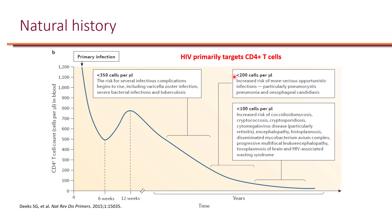Once the CD4 count hits the 200 mark, the risk of opportunistic infections becomes real. This is when you get pneumocystis pneumonia and esophageal candidiasis. As CD4 goes even lower — less than 100 — the number of opportunistic infections goes up further, including coccidioidomycosis, cryptococcosis, toxoplasmosis, and Mycobacterium avium complex.